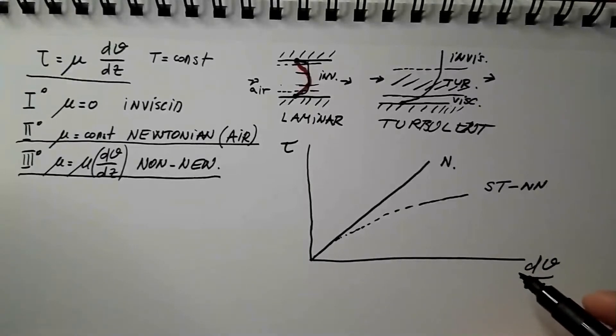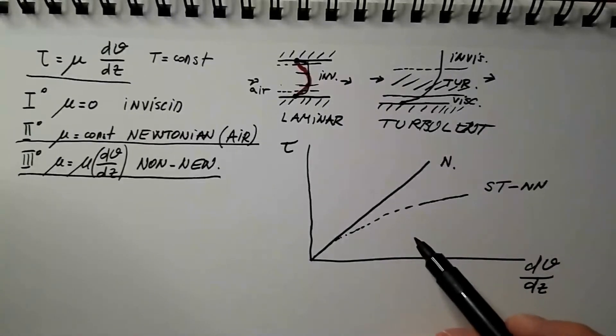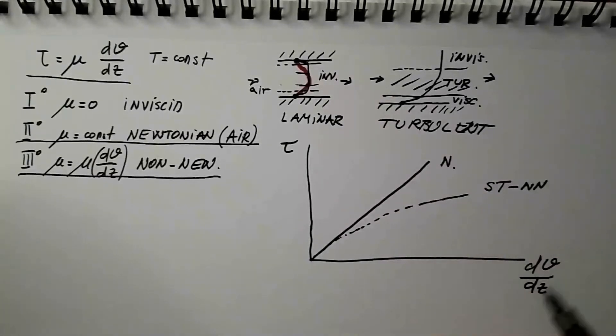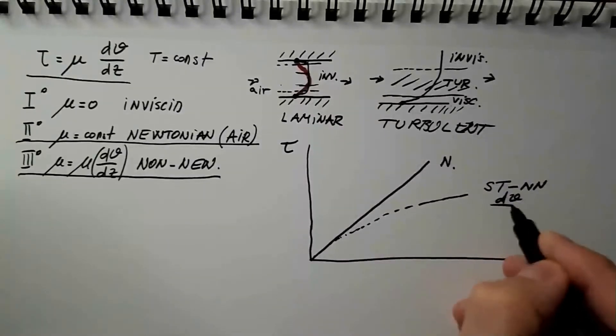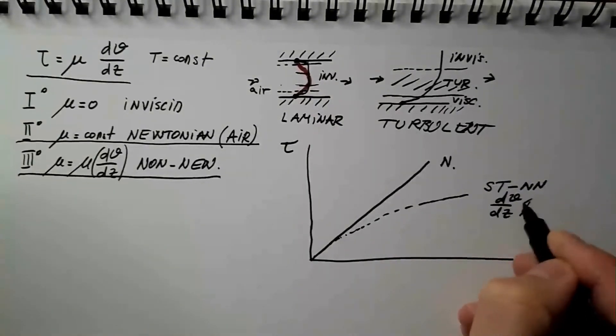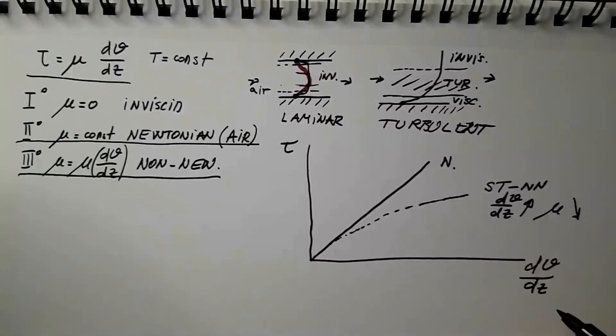And for shear thinning non-Newtonian fluids, the viscosity decreases as we increase the rate of shear deformation. So, in this case, as dv over dz increases, mu really decreases. And we will see later some examples of these fluids.